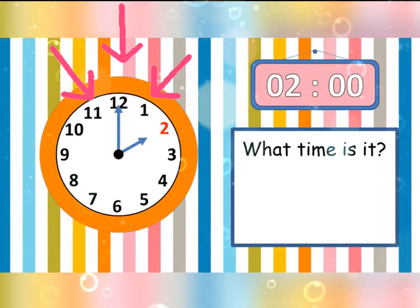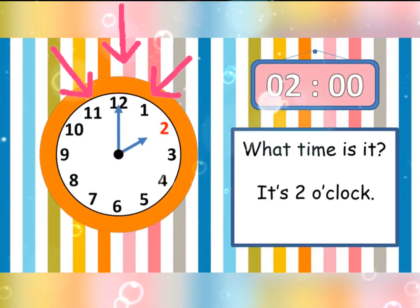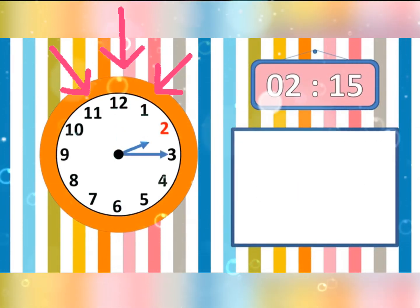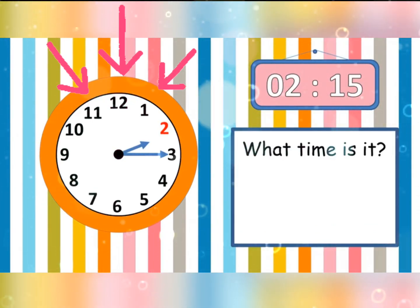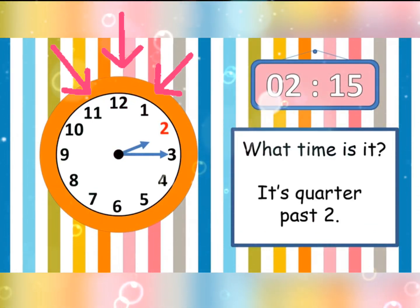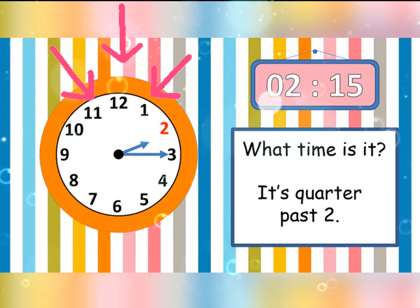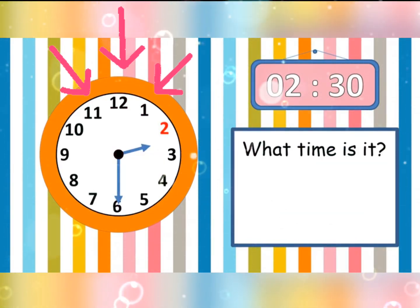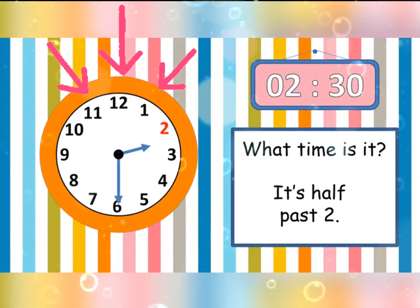What time is it? It is 2 o'clock. What time is it? It is quarter past 2. What time is it? It is half past 2.